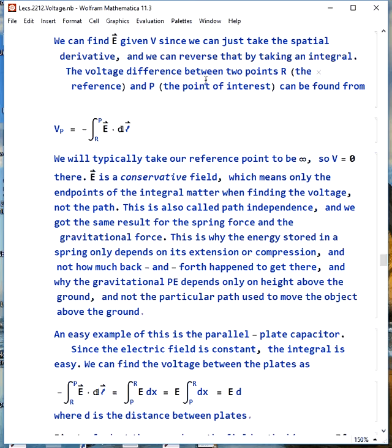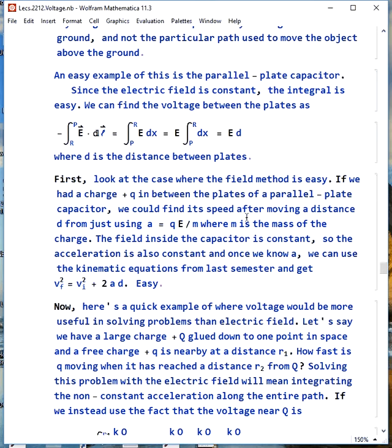Now, an easy example here is the parallel plate capacitor. Since the electric field is constant, the integral is easy. We can find the voltage between the plates here. As E comes outside the integral, we just get the integral between P and R. Now, notice this is not the direct distance of the path. This is the distance between the endpoints, because that's the direction the E field points, and the E will be perpendicular to the plates, so only motion perpendicular to the plates counts. We go from one plate to the next, we travel a distance little d, so our potential difference is E times d.